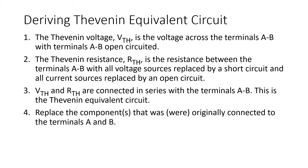The steps to deriving the Thevenin equivalent circuit are: Step 1, find the Thevenin equivalent voltage, VTH. This is the voltage across the terminals A and B with those terminals opened. Step 2 is to find the Thevenin equivalent resistance, RTH. This is the resistance between terminals A and B with all voltage sources replaced by a short circuit and all current sources replaced by an open circuit.